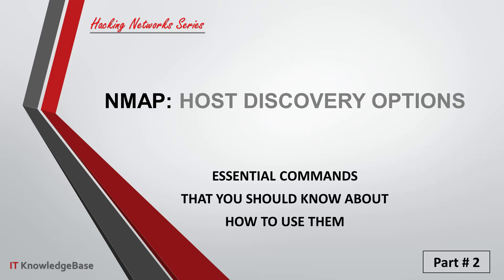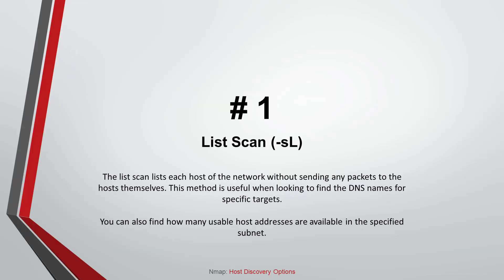Command number one: List Scan. The list scan lists each host on the network without sending any packets to the hosts themselves. This method is useful when looking to find the DNS names for specific targets. You can also find how many usable host addresses are available in the specified subnet.